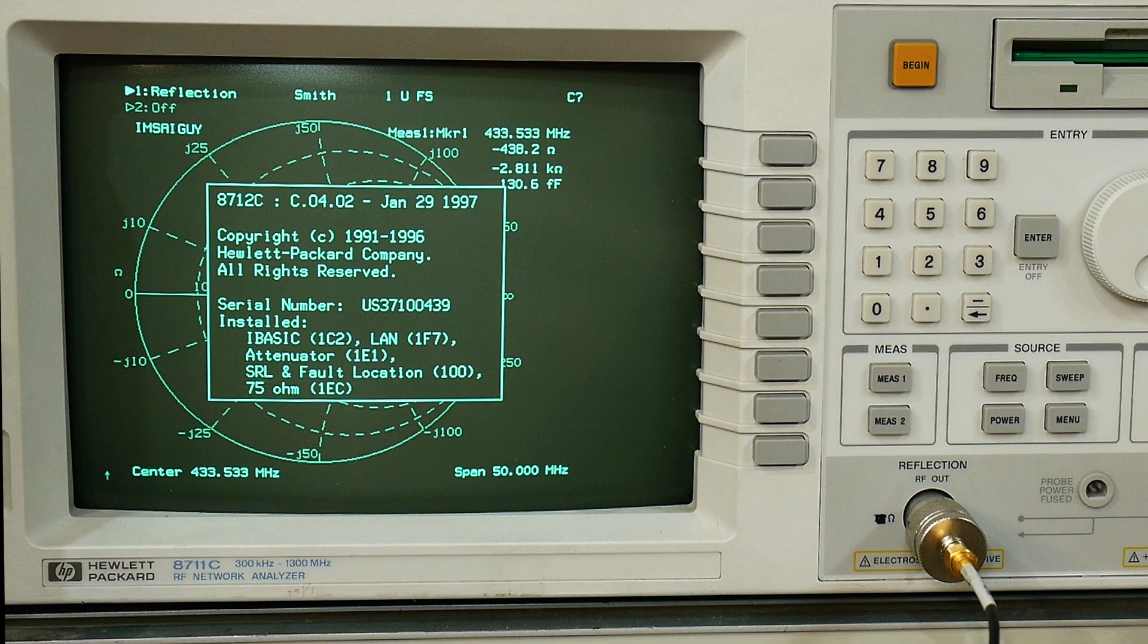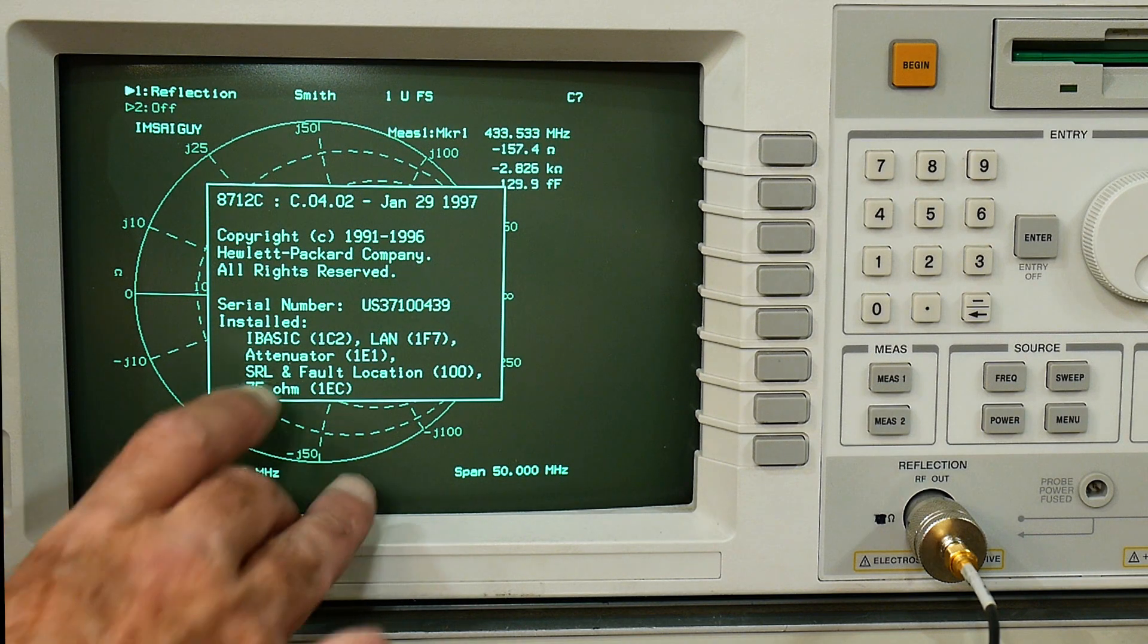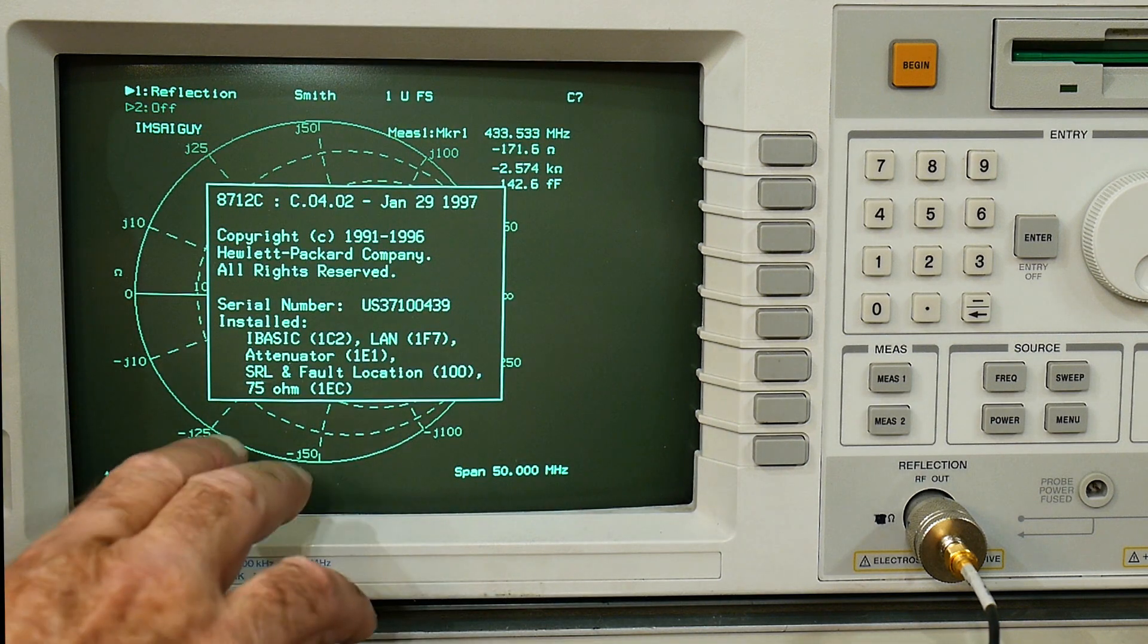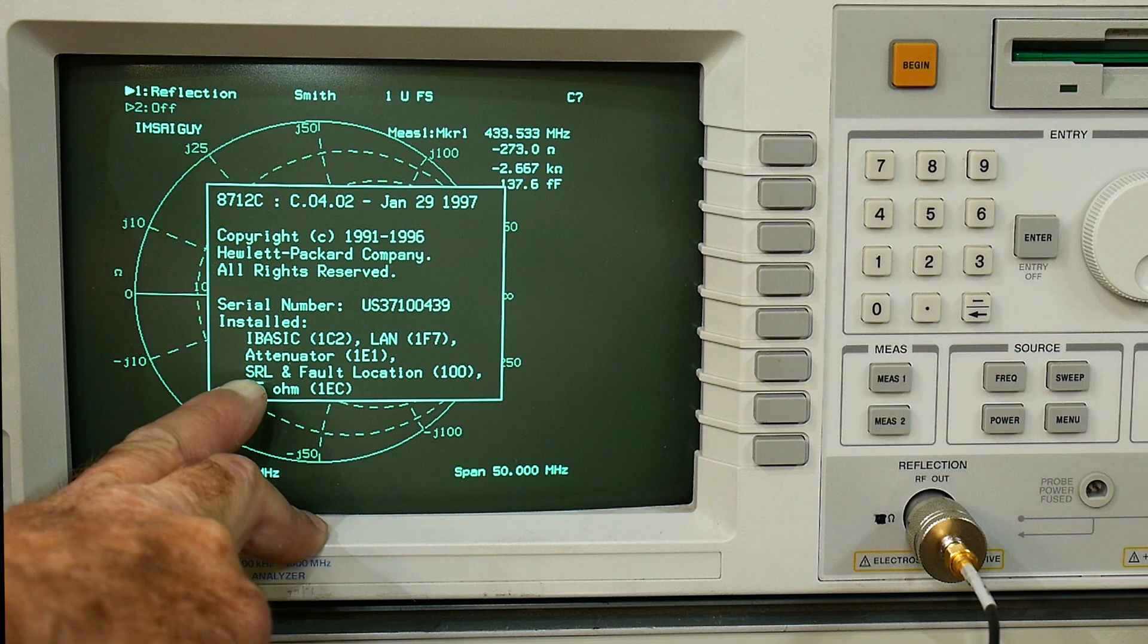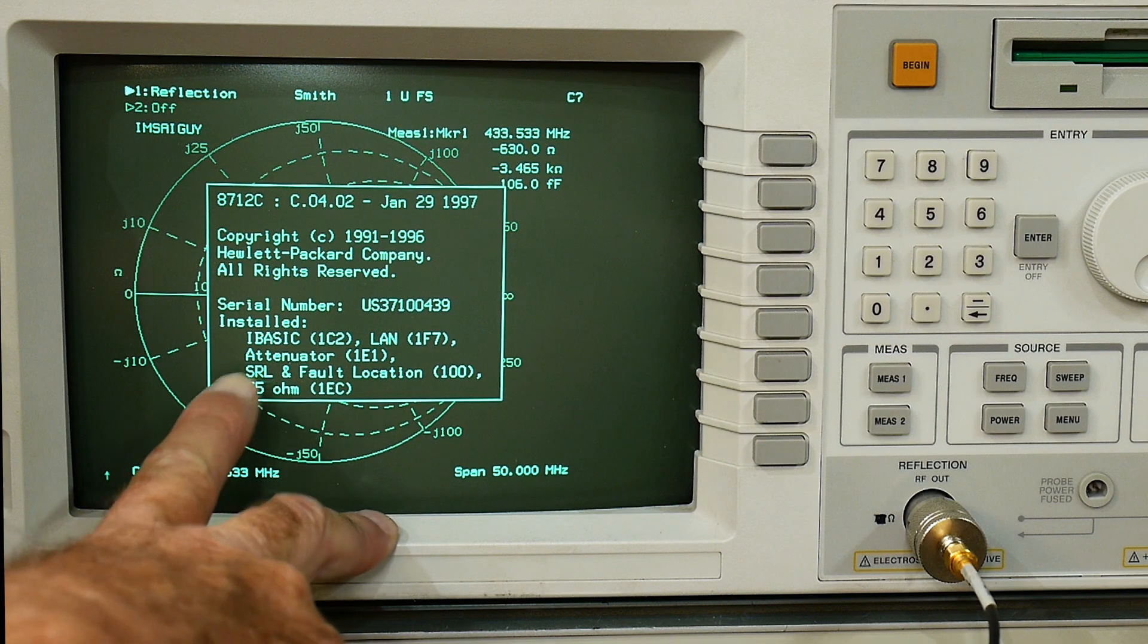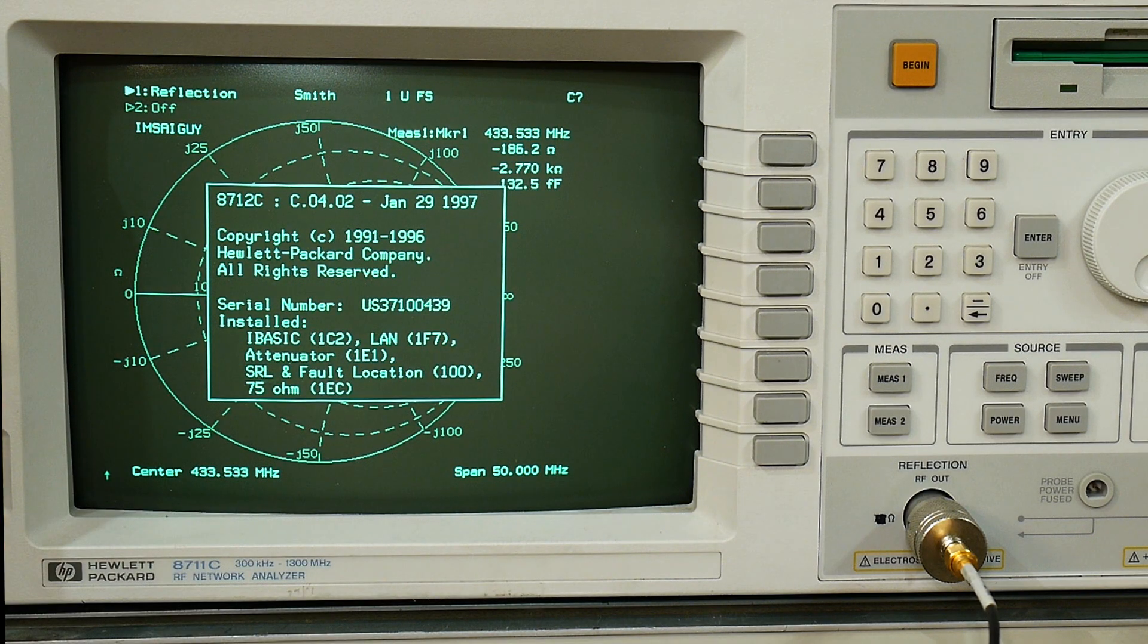It says it's an 8712C, 1997, good days. It has some things installed: iBasic, LAN network, the attenuator, SRL short resistant load. I don't know what the SRL is, fault location maybe. It is a 75 ohm unit so I have converted this into a 50 ohm unit. Again there's some videos before this one that shows how to convert a 75 ohm unit into a 50 ohm unit.